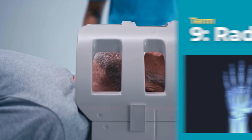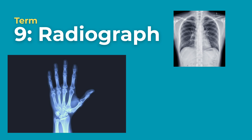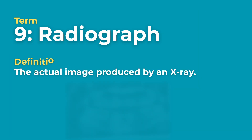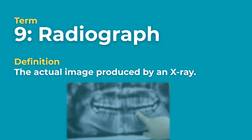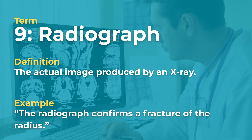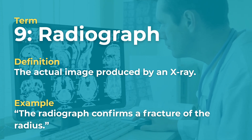Let's move on to Radiograph. A radiograph is the actual image produced by an X-ray. Example: The radiograph confirms a fracture of the radius.